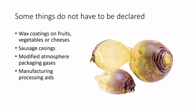Some things do not have to be declared at all. Wax coatings on fruits and vegetables — turnips are very commonly wax-coated — do not require declaration. Sausage casings, modified atmosphere packaging gases, and manufacturing and processing aids are also exempt. A processing aid is an ingredient that does not remain in the final product — for example, a non-stick spray on a loaf pan, or an enzyme used to clarify juice that gets denatured. These processing aids don't have to be declared unless there's an allergen component that could cause cross-contamination.